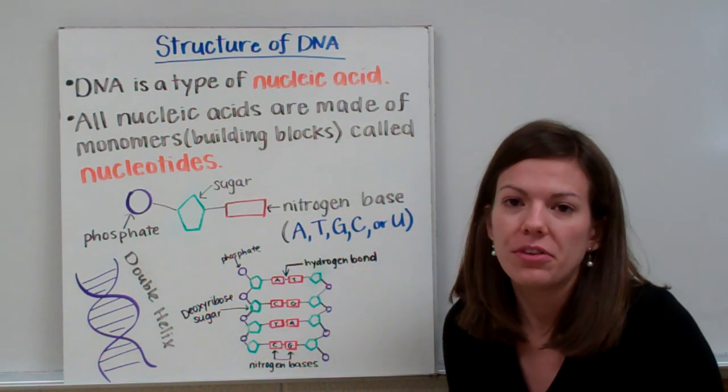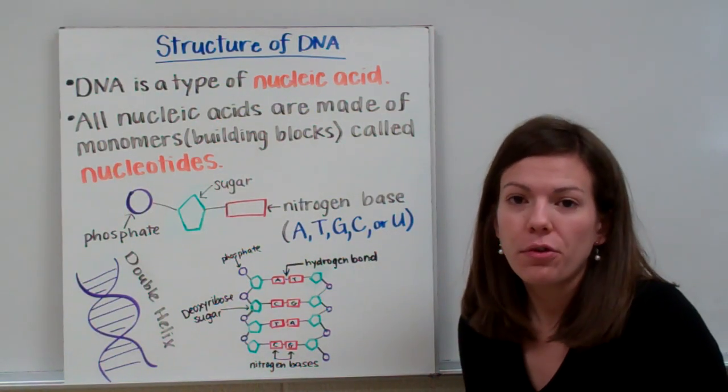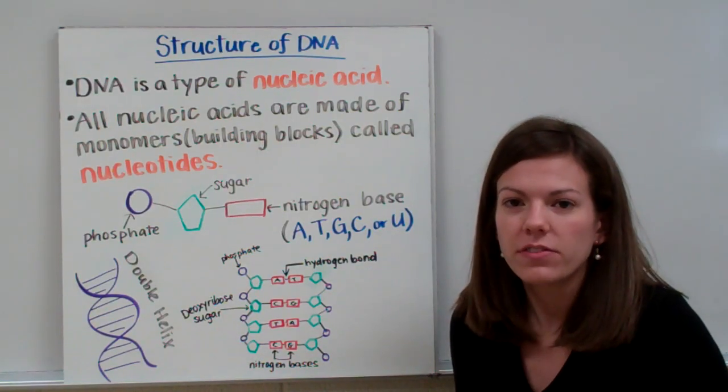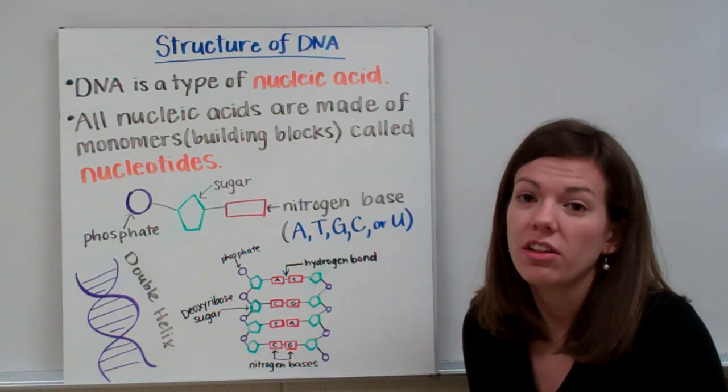Different parts of your DNA can be turned on or off to make different cells of your body become hair cells or eye cells or skin cells or any of the other cells found in your body. So let's take a look at what DNA actually looks like.